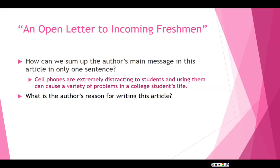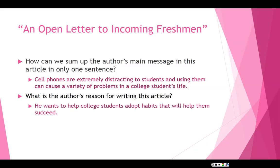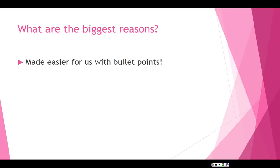We want to go a little bit further and see what his reason is. His reason is to help college students adopt habits that will help them succeed. Now because we're summarizing an entire article — and we're doing so in maybe an essay length — this is a good guide for your summary assignment. We want to find out what his biggest reasons are for his argument. In this case we have an article that has bullet points, which is great because we know those bullet points are the main ideas, so we can just list them.